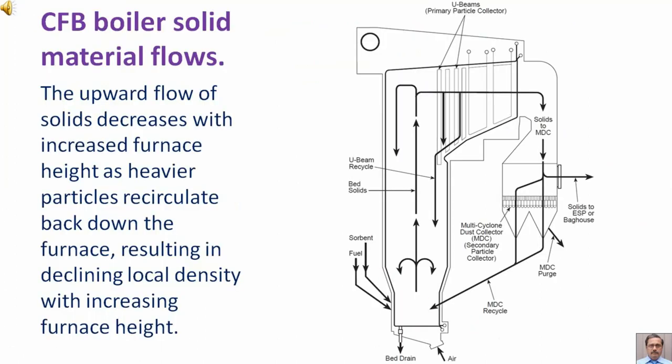Circulating fluidized bed boiler solid material flows. The upward flow of solids decreases with increased furnace height as heavier particles recirculate back down the furnace, resulting in declining local density with increasing furnace height.